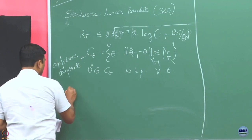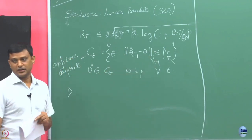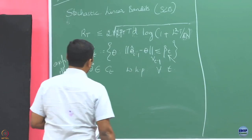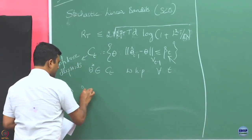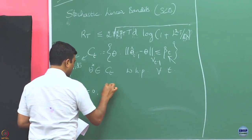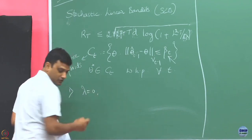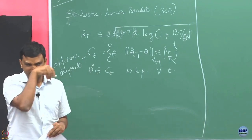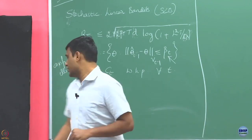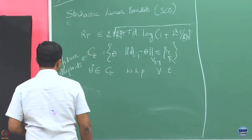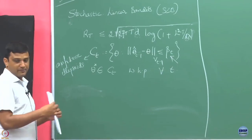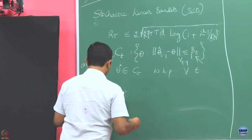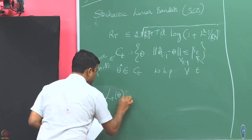To understand this, we are going to make a couple of simplifying assumptions. First, we are going to set lambda equals to 0 — that is, there is no regularization. Before I write this: how did I find my theta_hat? Theta_hat is found by minimizing a regularized least squares function. What was that function? We defined a loss function which we tried to minimize over theta.